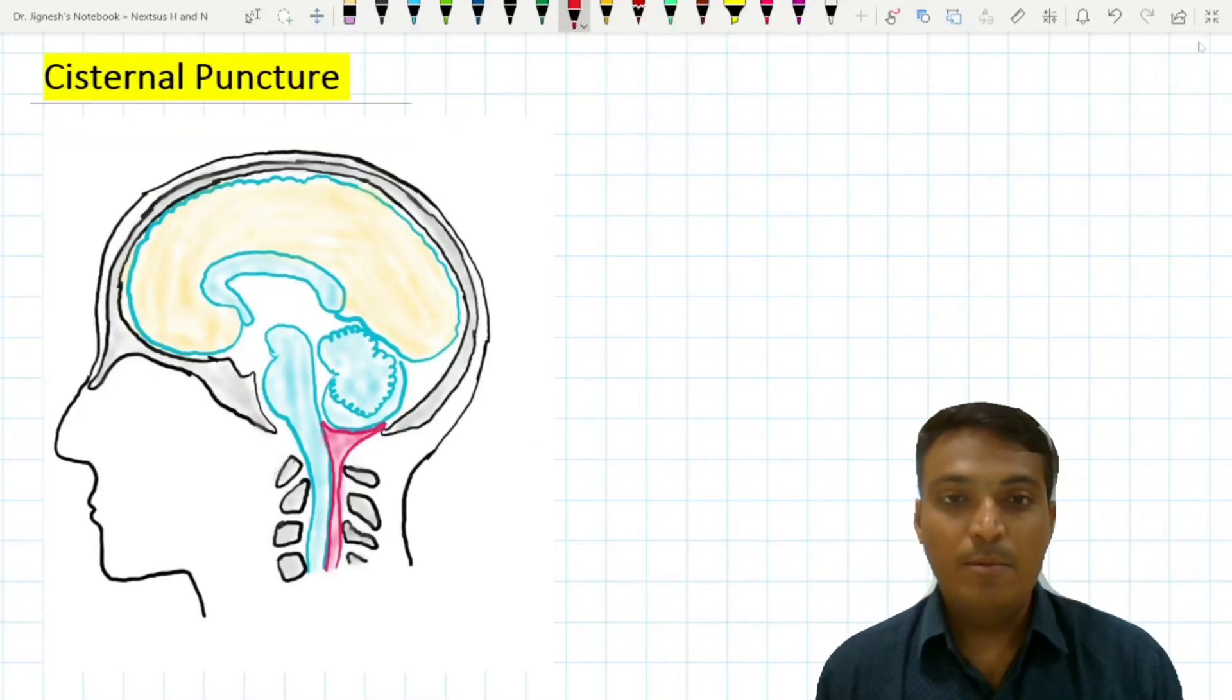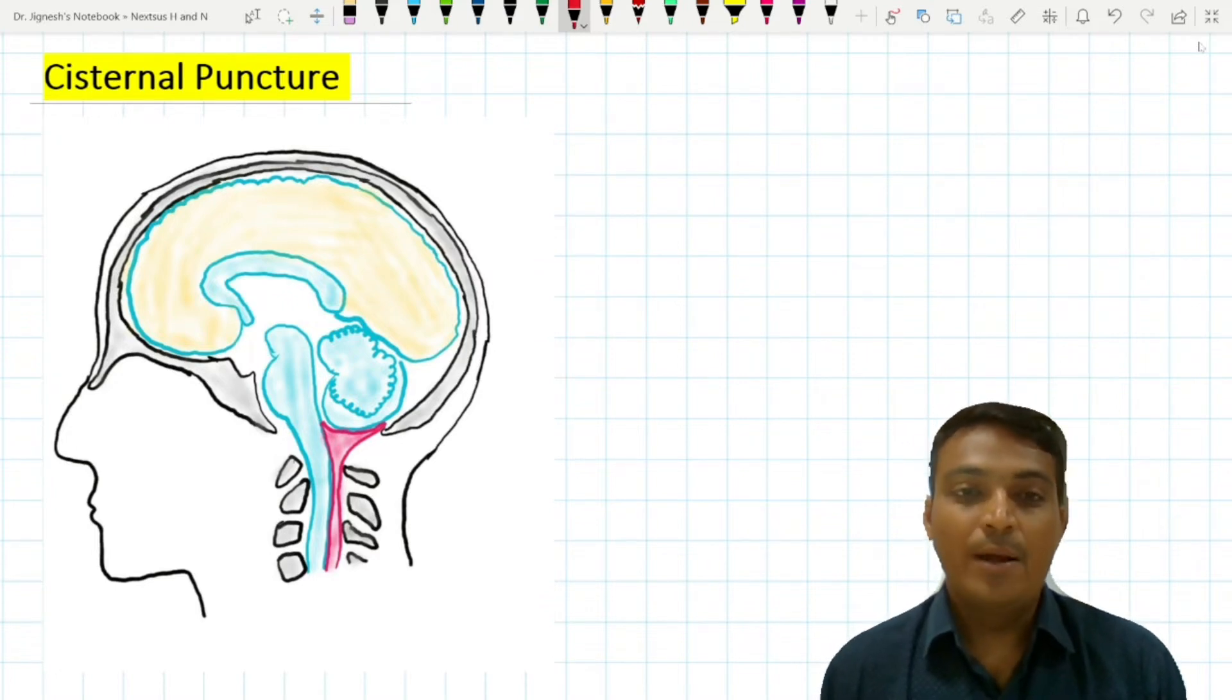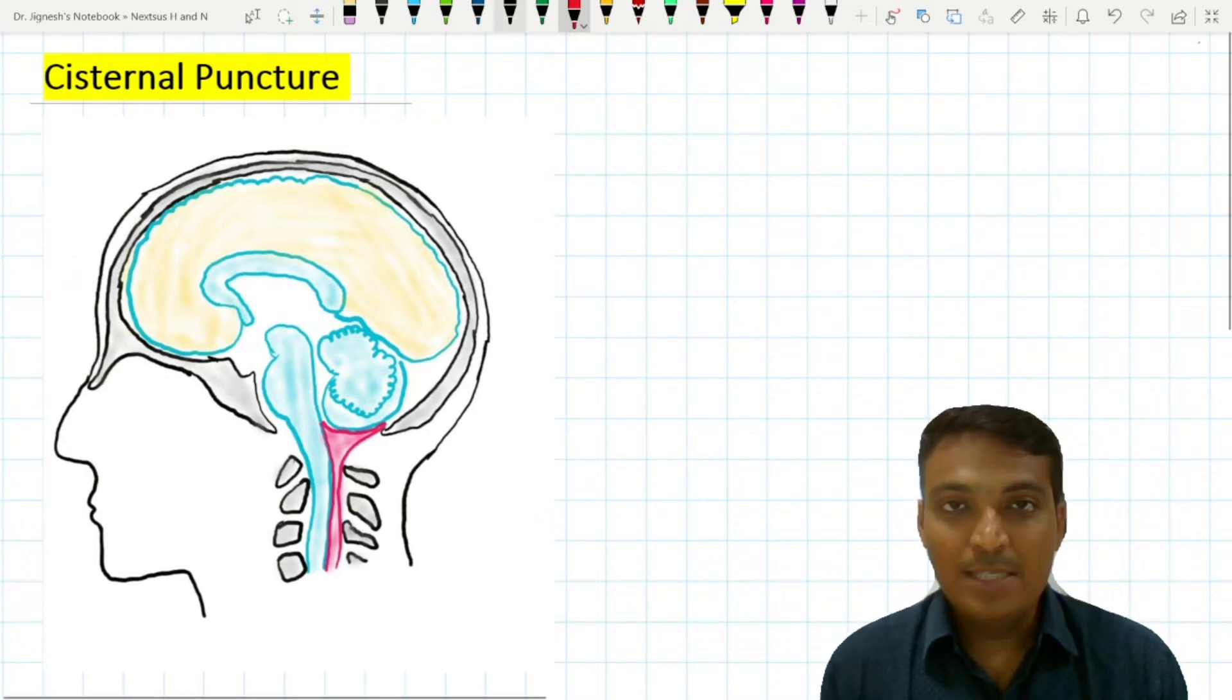Cisternal puncture is a diagnostic procedure to obtain CSF from the cisterna magna. In this figure, this is the sagittal section of the head and neck with the cisterna magna. It is present somewhere here.